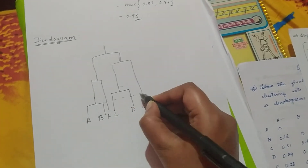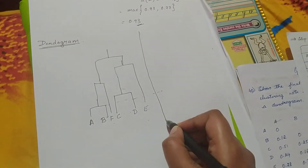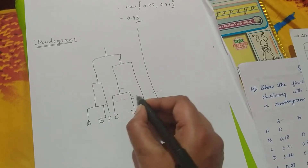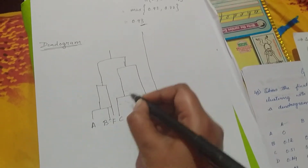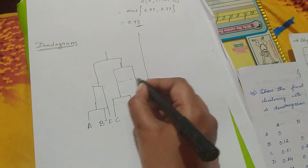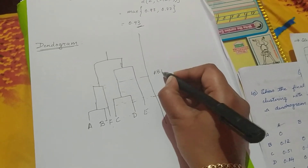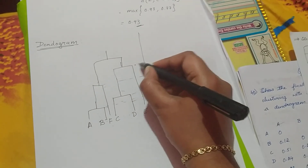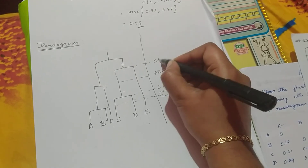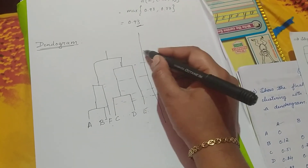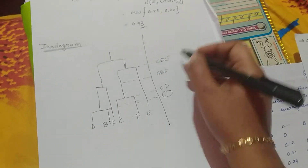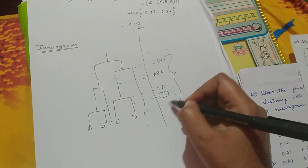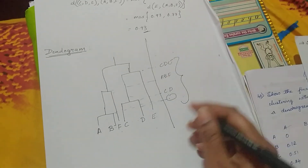You can also annotate the dendogram with distances along a vertical axis — for example, marking the maximum distance of the AB cluster, the ABF cluster, the CD cluster, and the CDE cluster at each corresponding merge level. If the distances are not mentioned it is also fine. This is the complete dendogram, and this question is worth six marks.